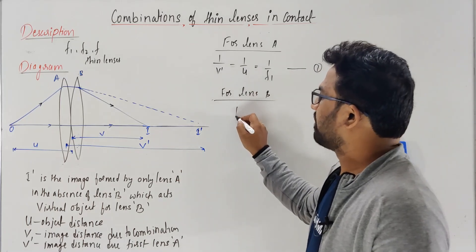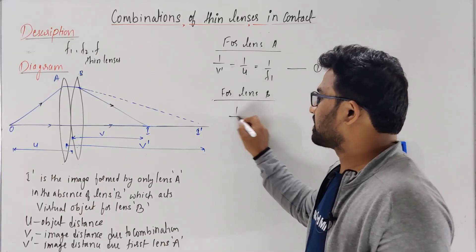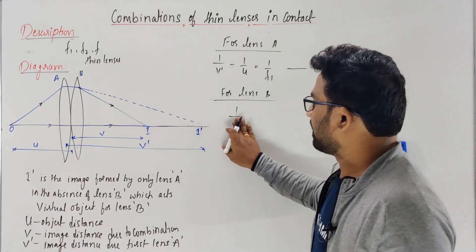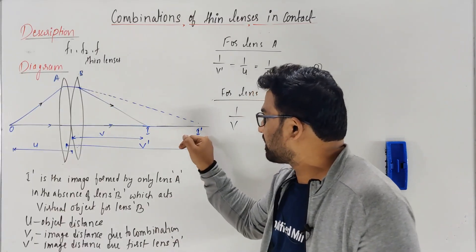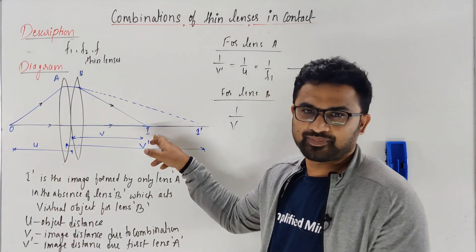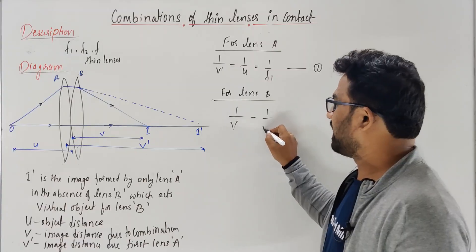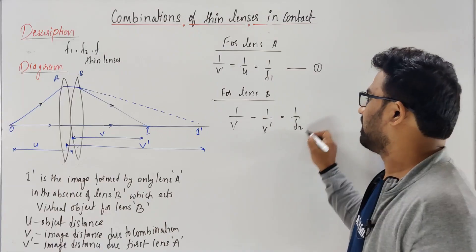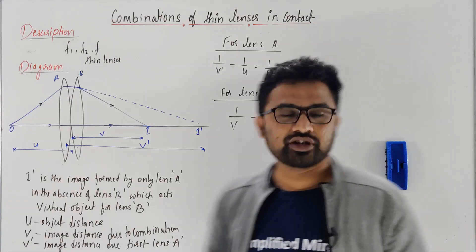1 over image distance - the final image distance is v. Object distance is v' for the second lens. So 1/v minus 1/v' equals 1/f2. This is equation number 2. Just add the two equations.